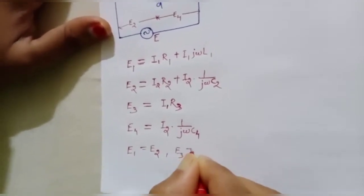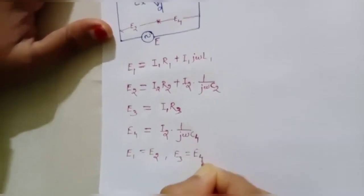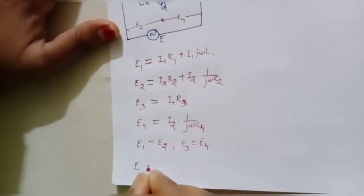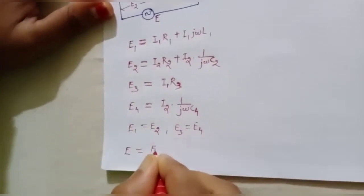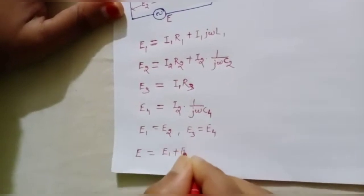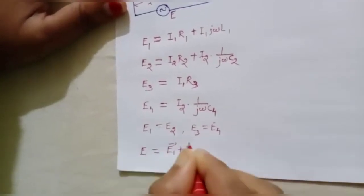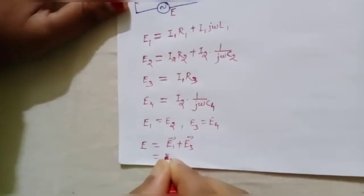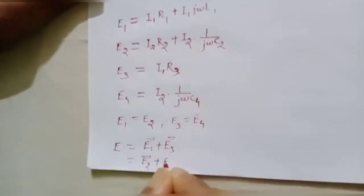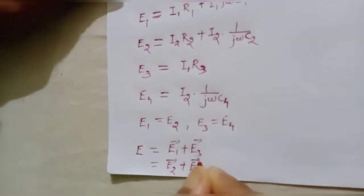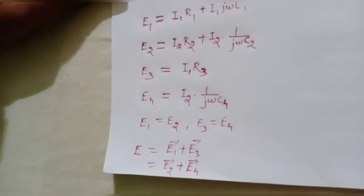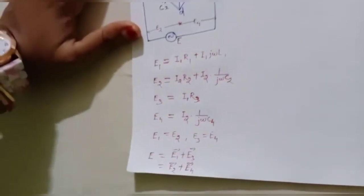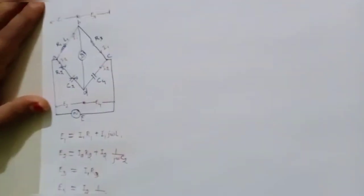The total circuit voltage E must be the phasor sum of either E1 and E3, or E2 and E4. With this data we can draw the phasor diagram.